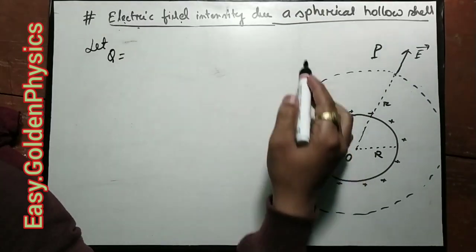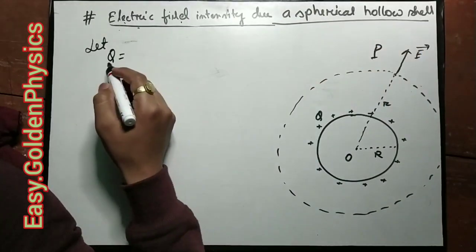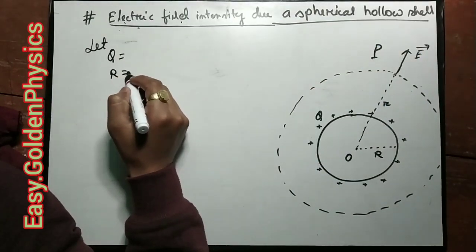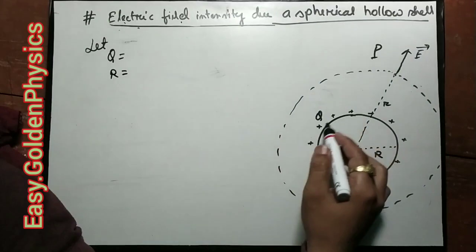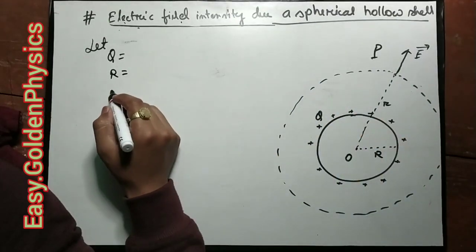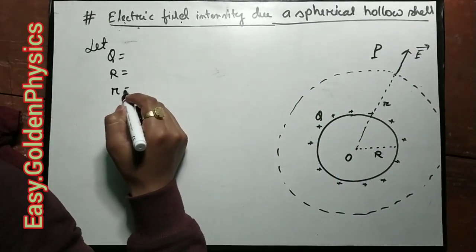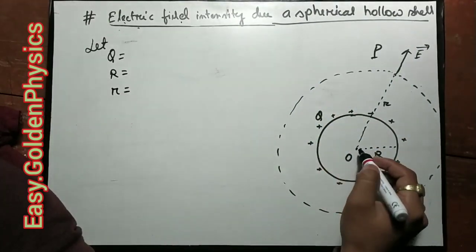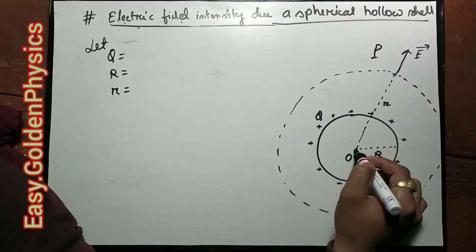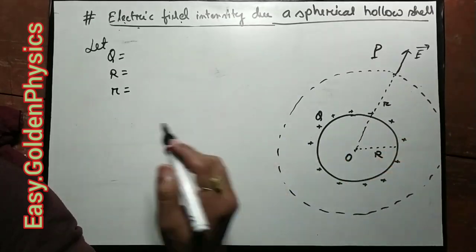The charge on the hollow spherical shell is capital Q. Capital R is the radius of the spherical shell. Small r is the distance of point P from the center of the spherical shell.